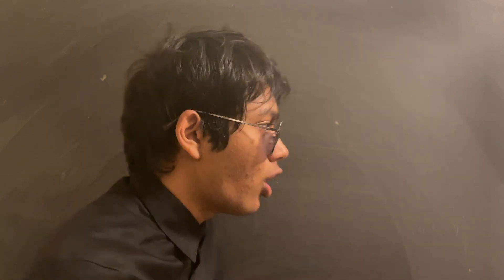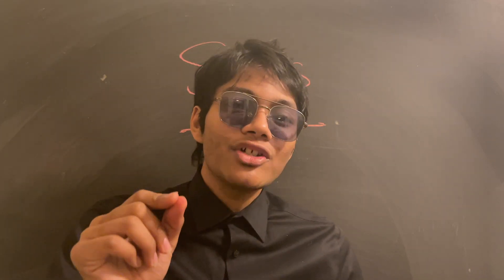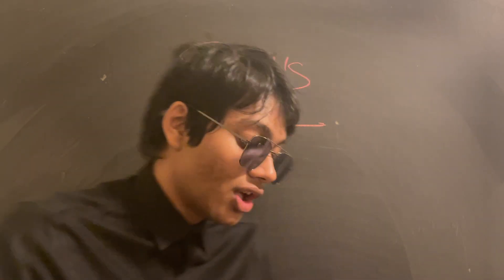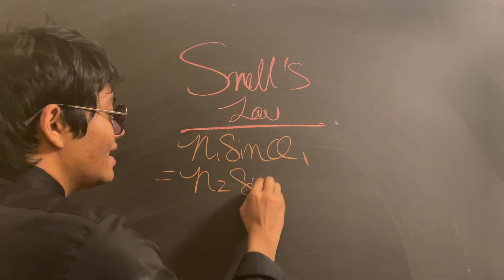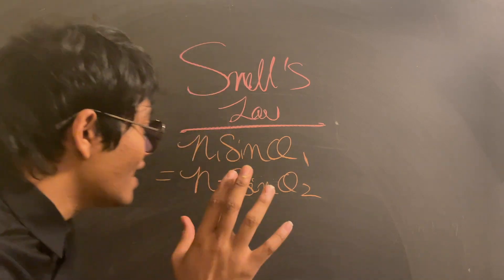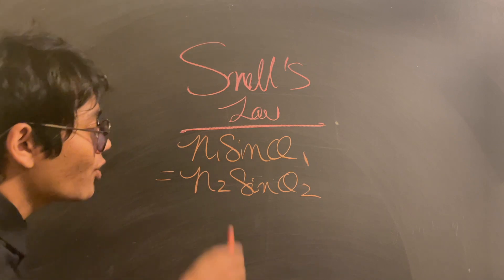Snell's law is N1 sin theta 1 equals N2 sin theta 2. Every high school student learns this, but they don't know why it works. We'll cover that in the next episode, but for this episode we're at least going to check out how it works. This equation tells us what happens when light travels between two mediums.